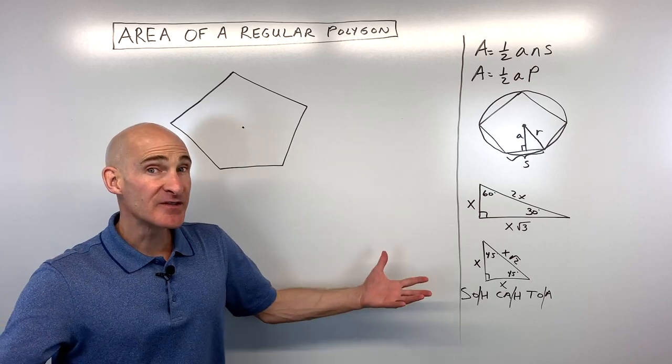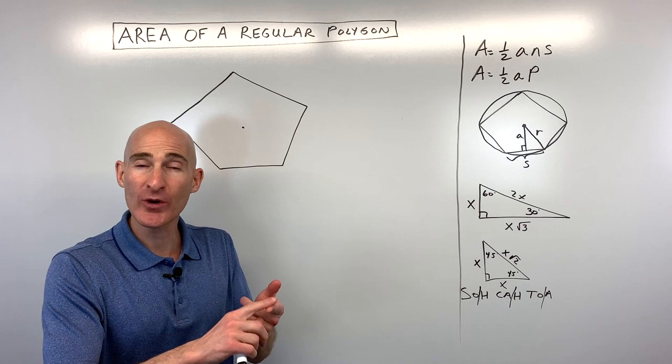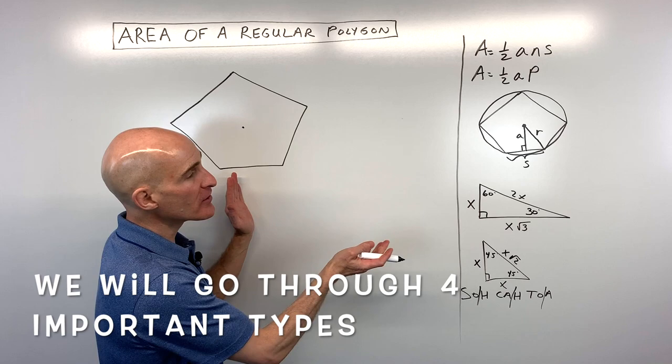In this video, you're going to learn how to find the area of a regular polygon. We're going to talk about when you're given a radius, or you're given the perimeter, or a side length, or the apothem. But first, let's talk about where do these formulas come from, and how can we use them to find the area of a regular polygon.